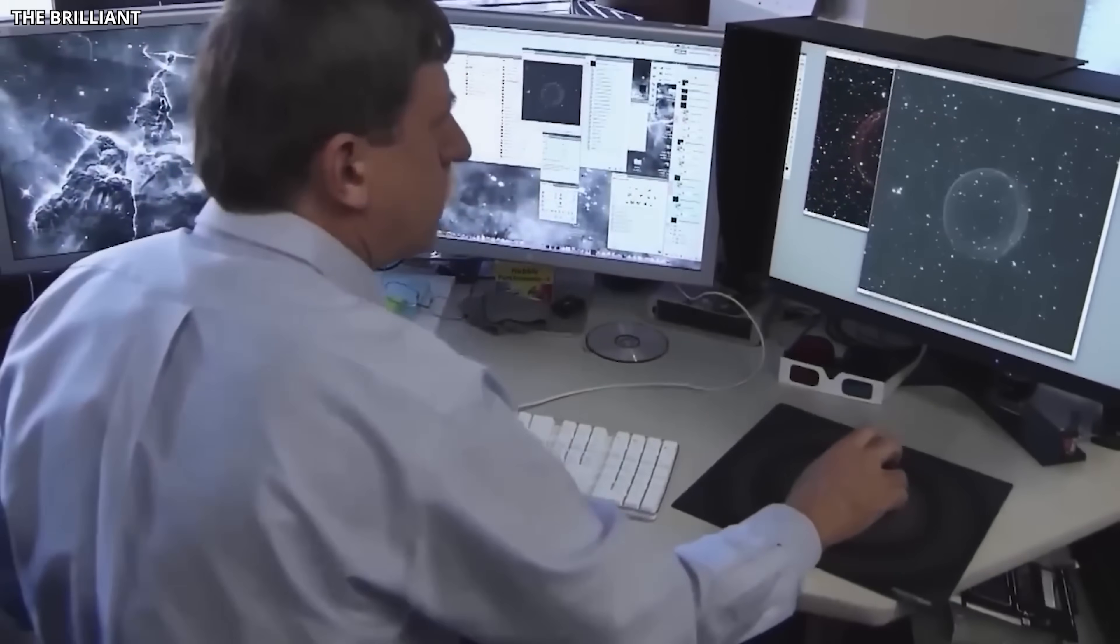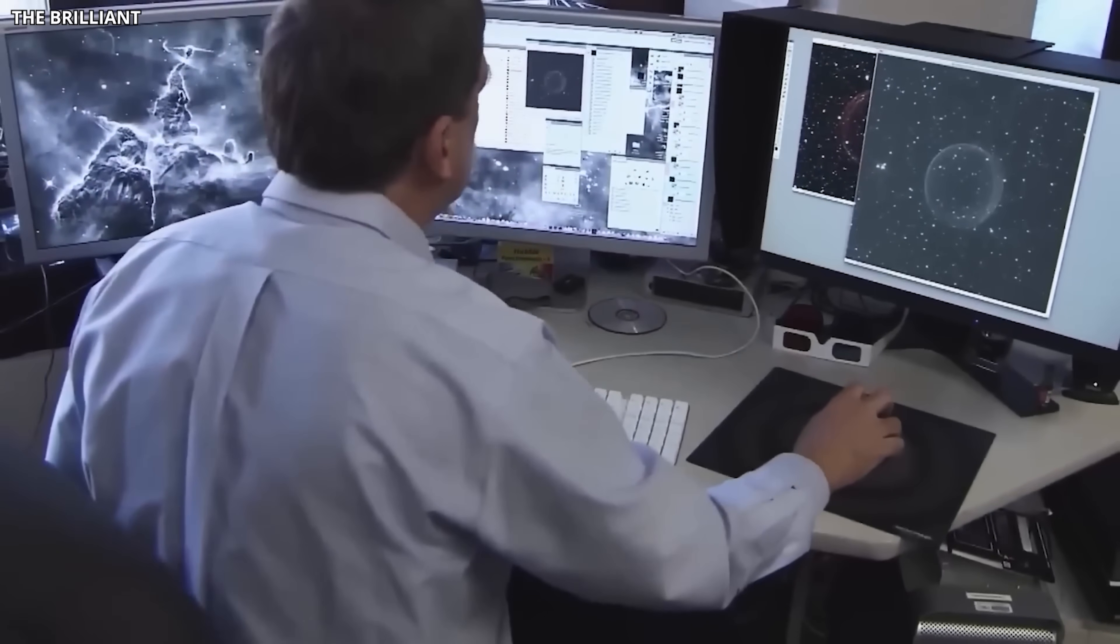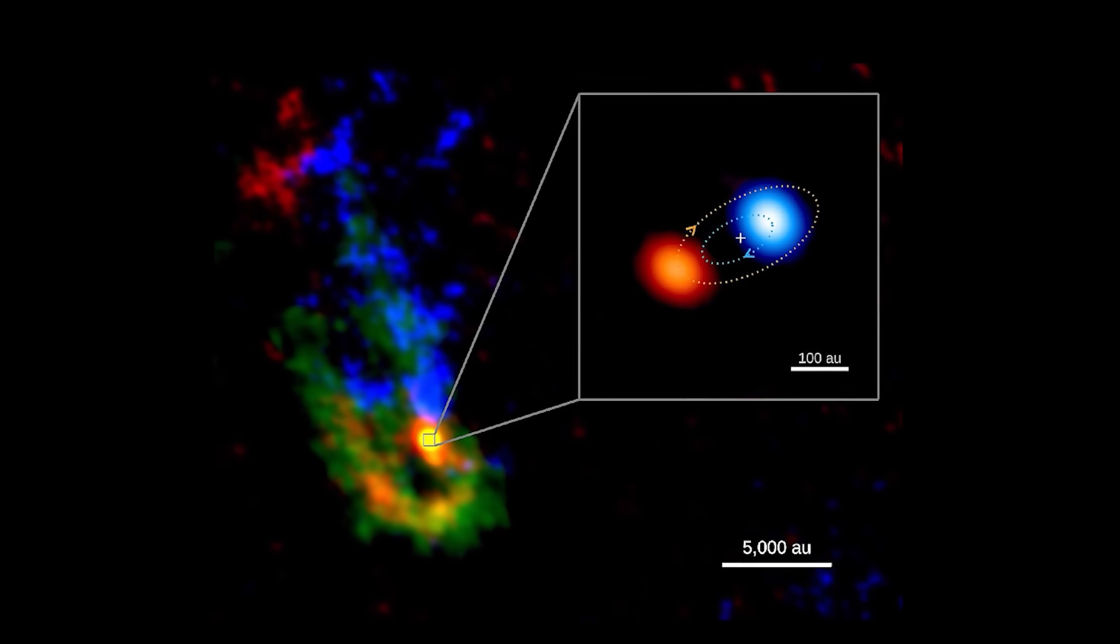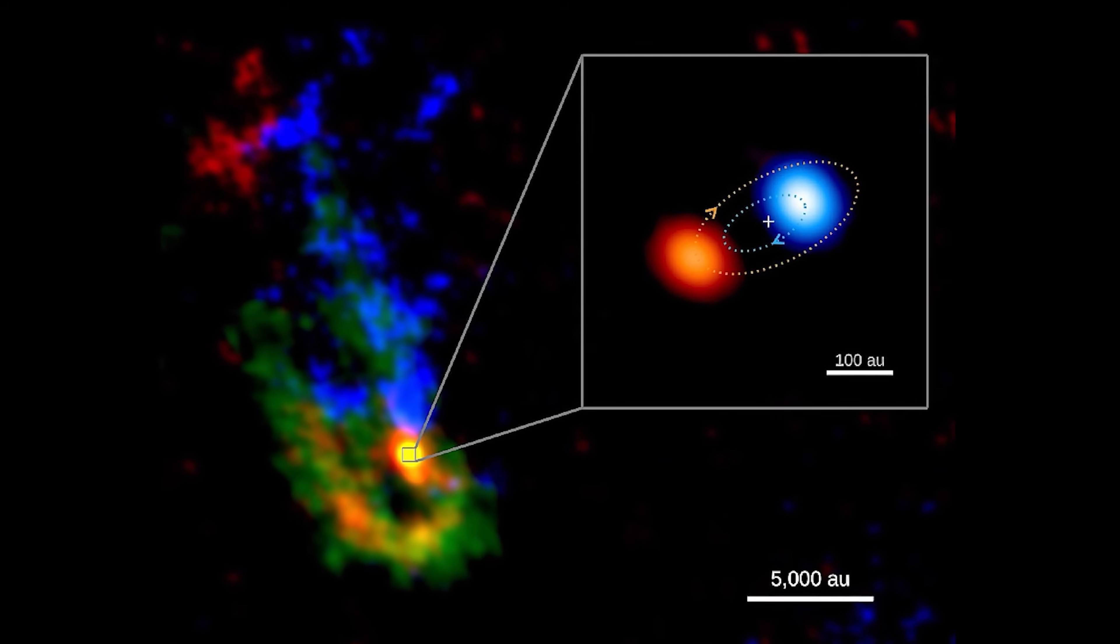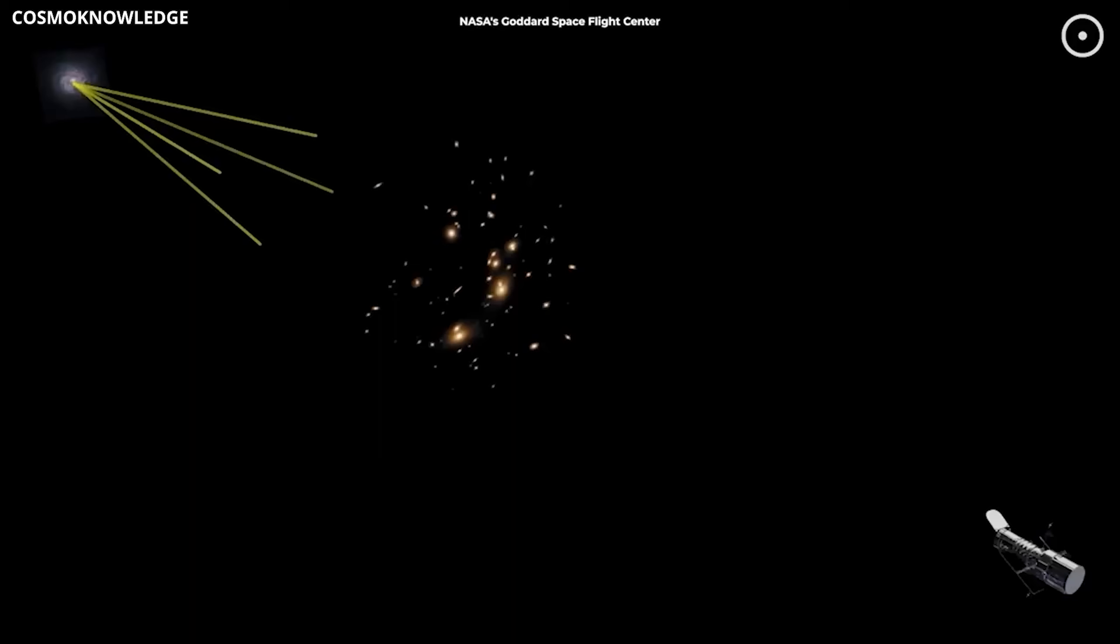To tackle this, researchers created detailed computer models of the lens, mapping the positions of the four visible galaxies and estimating their masses based on their luminosity, setting the stage to uncover the invisible culprit: a dark matter halo.